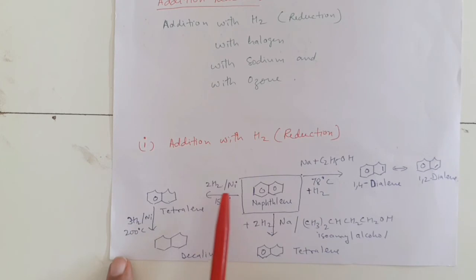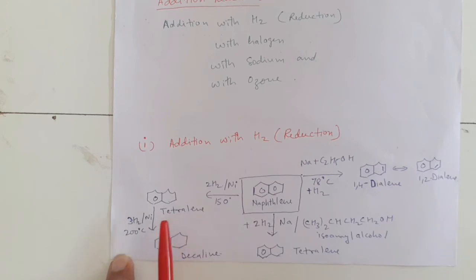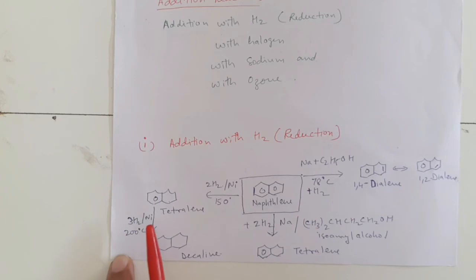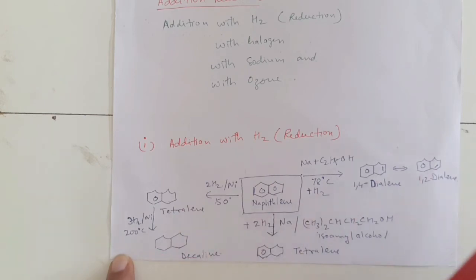This tetralin, again reduced with hydrogen — three molecules of hydrogen — in the presence of nickel at 200 degrees centigrade, all the double bonds are reduced by hydrogen and we get the saturated compound, that is decalin.